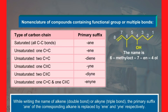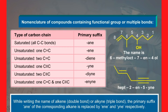While writing the name of an alkene with a double bond or alkyne with a triple bond, the primary suffix '-ane' of the corresponding alkane is replaced by '-ene' or '-yne' respectively. However, if the multiple bonds occur twice or thrice in the parent chain, the prefix di- or tri- is attached to the primary suffix -ene or -yne.